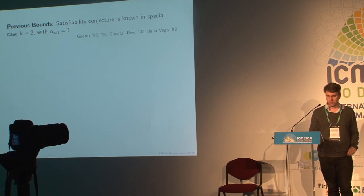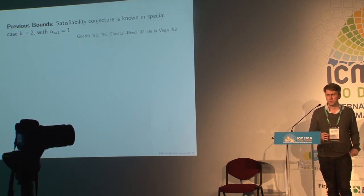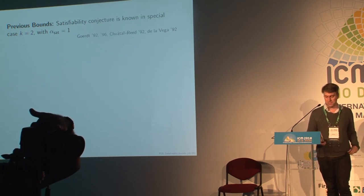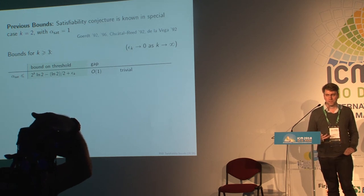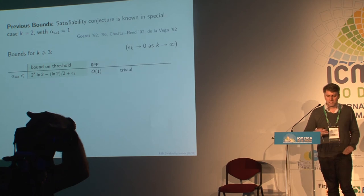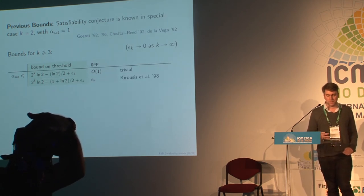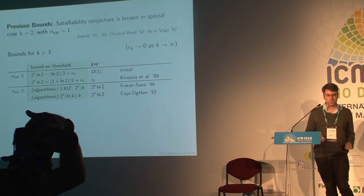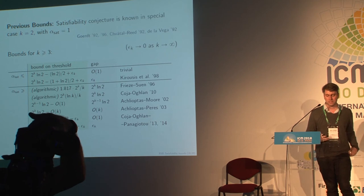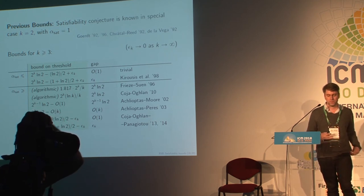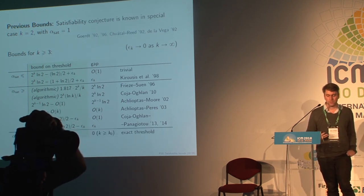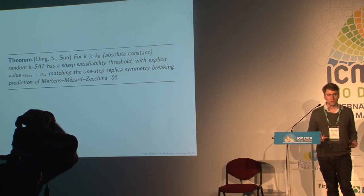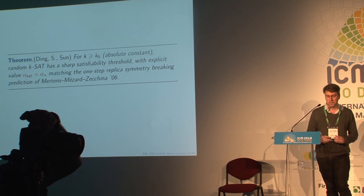Just in terms of what's been known previously: the case k=2 is simpler, there's a branching process argument and the threshold is 1. The first moment gives a quite good upper bound, and there's a slightly more complicated argument that gives a very good upper bound. The earlier lower bounds were algorithmic but are really stuck below the clustering threshold. All of the progress after that has been non-constructive, using essentially more and more sophisticated versions of the second moment method. The final result now is that there are matching upper and lower bounds for all large enough values of k. So for all large enough values of k, the satisfiability conjecture holds, and moreover it's at the threshold predicted by the physicists — first by Mertens, Mézard, and Zecchina.